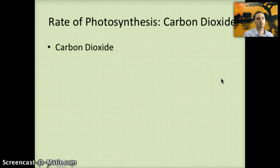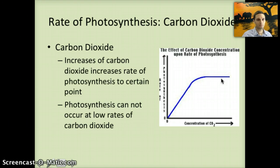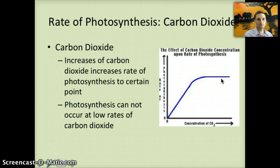The third condition is carbon dioxide. With an increase of CO2, there's an increase of photosynthesis up to a certain point, similar to light intensity. As CO2 increases, photosynthesis speeds up because chloroplasts and their enzymes can accept more CO2. Eventually, if CO2 continues to increase, there are too many CO2 molecules for the available binding sites and enzymes, so the rate plateaus. Importantly, photosynthesis cannot occur at very low levels of CO2 — if there's not enough, the process can't even begin.